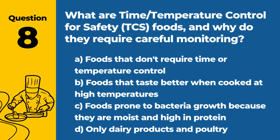Question 8. What are time/temperature control for safety (TCS) foods and why do they require careful monitoring? The answer is C: Foods prone to bacteria growth because they are moist and high in protein. TCS foods require careful time and temperature control to prevent foodborne illness.